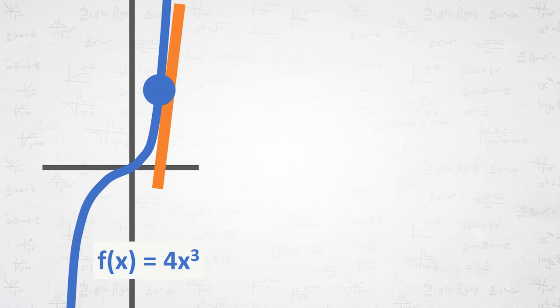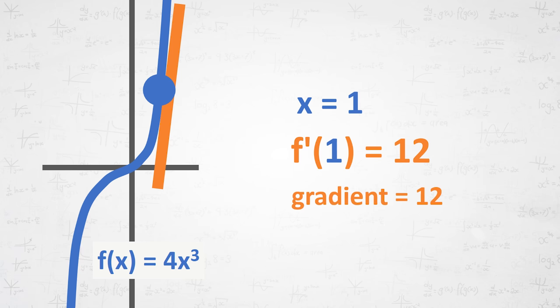Use this to find the slope of 4x cubed. Sub x is 1 in 12x squared, and you will find that the slope here is 12.